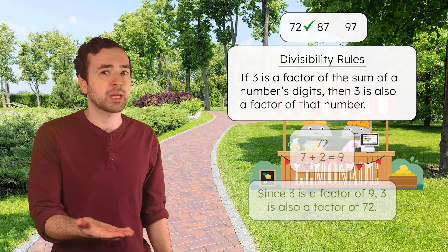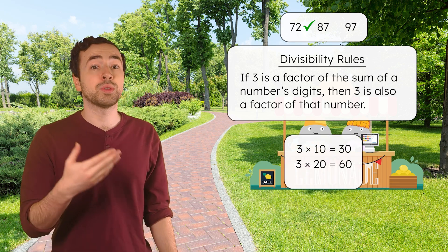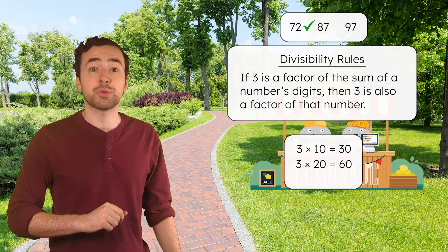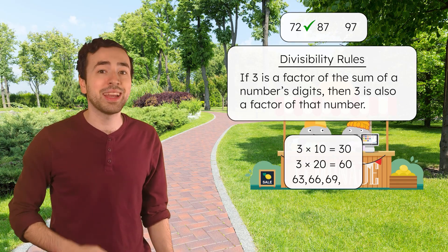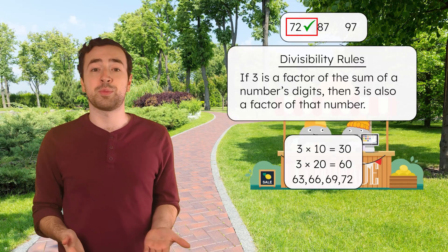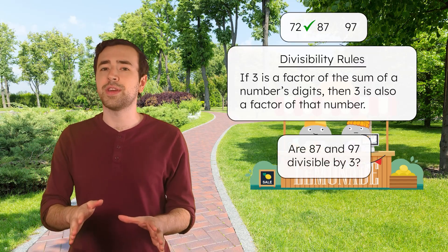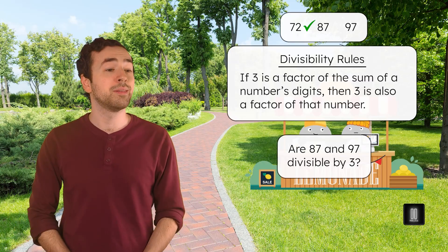We can check this by skip counting. 3 times 10 is 30, so 3 times 20 equals 60. Skip counting by 3s from there takes us to 63, 66, 69, 72. 72 is divisible by 3. Pause here to figure out if 87 and 97 are divisible by 3 in your guided notes.